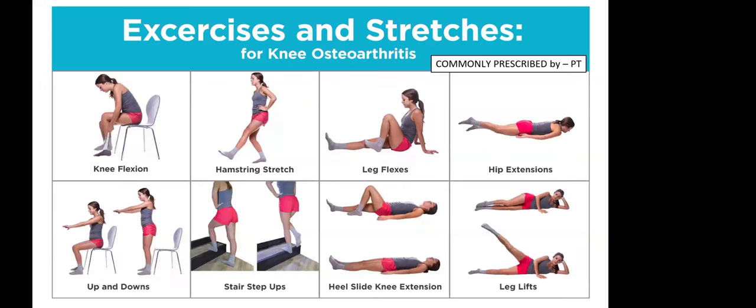Before undergoing TKR, we go for conservative management where exercises and stretches are prescribed for knee osteoarthritis. These include knee flexion exercise, hamstring stretch, heel slides, hip extension to strengthen the glutes, sit-to-stand exercises, stair step-up exercises, heel slides focusing on terminal knee extension, and side-lying leg lifts for strengthening the gluteus medius — that is, hip abductor strengthening. These are the commonly prescribed exercises done by a physiotherapist.